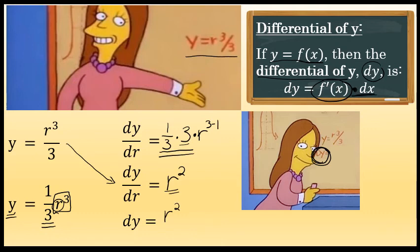times the differential. The definition said that we'll multiply that by the differential of X, but here our second variable is R, so we'll multiply it by the differential of R. So D-Y equals R squared times D-R. This is the differential of Y, which again can be used as an approximation of the change in Y.